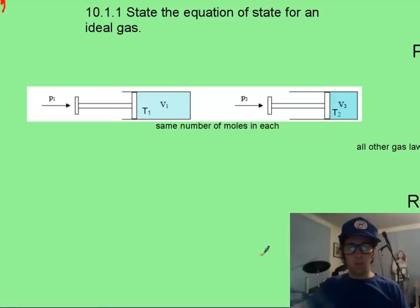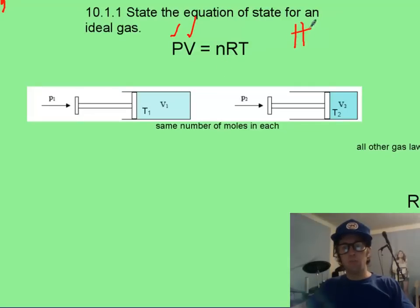First thing, I want you to state what the equation of state is for an ideal gas. Now that is probably very likely my old friend and your old friend, PV=nRT. Where you probably know that P is pressure, V is volume. This n, though, might be a little bit new to you.